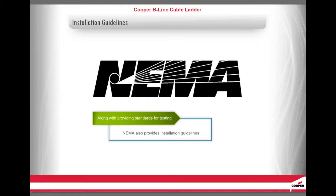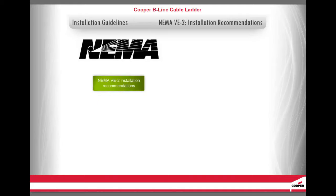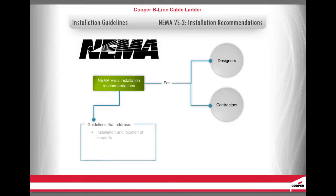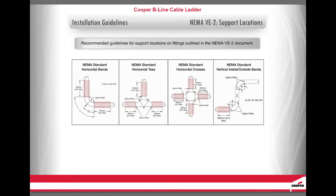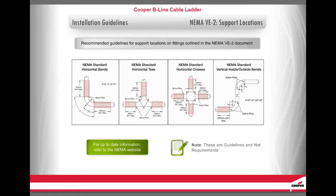Along with providing standards for testing, NEMA also provides installation guidelines. The NEMA VE2 installation recommendations are for designers and contractors. They are guidelines that address installation and location of supports, field modifications, grounding and bonding, as well as handling and storage. The NEMA VE2 document is free and publicly available for download on the NEMA website. The recommended guidelines for support locations on fittings are outlined in the NEMA VE2 document — for the most up-to-date information, refer to the NEMA website. Note: these are guidelines and not requirements.